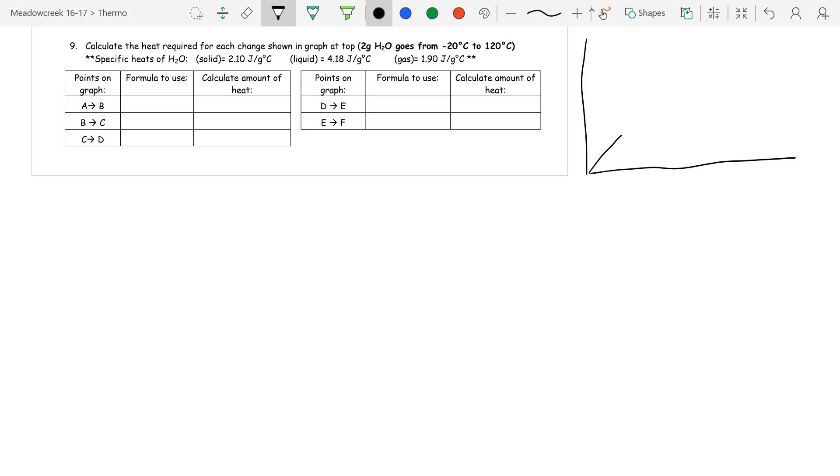You start off at a solid, start to melt, become a liquid, you start to vaporize and become a gas. So we have solid, liquid, gas. You start to melt here and you start to vaporize or boil there. So we're going to label this point A, B, C, D, E, and F.